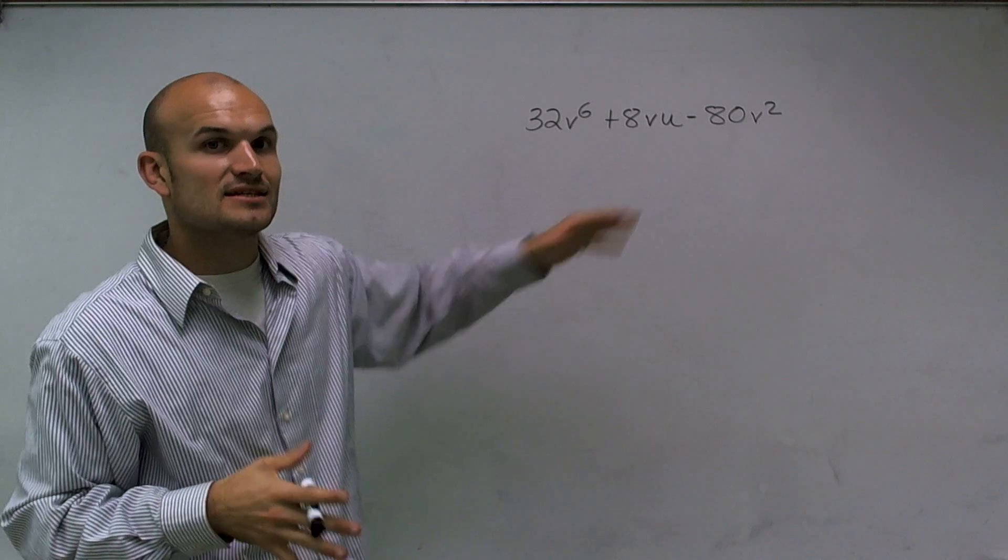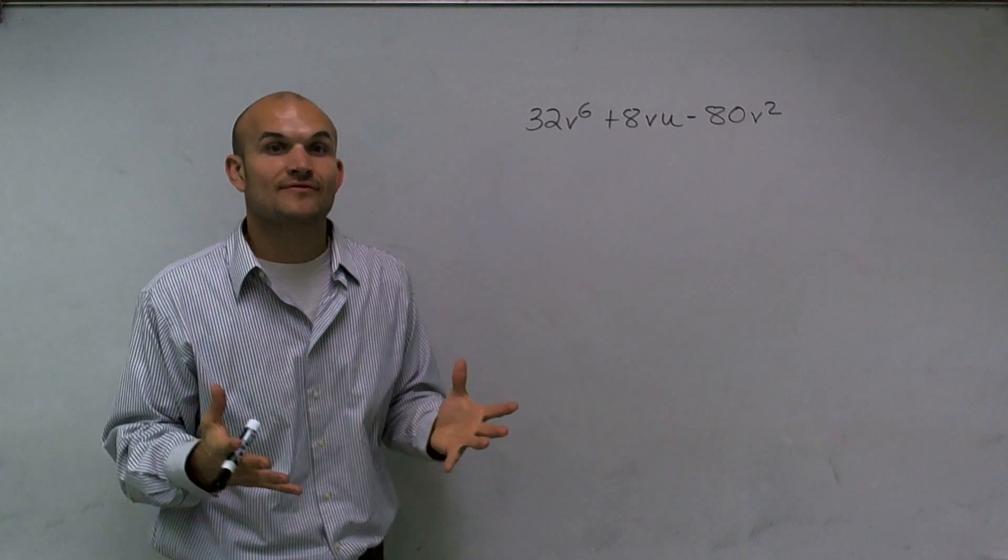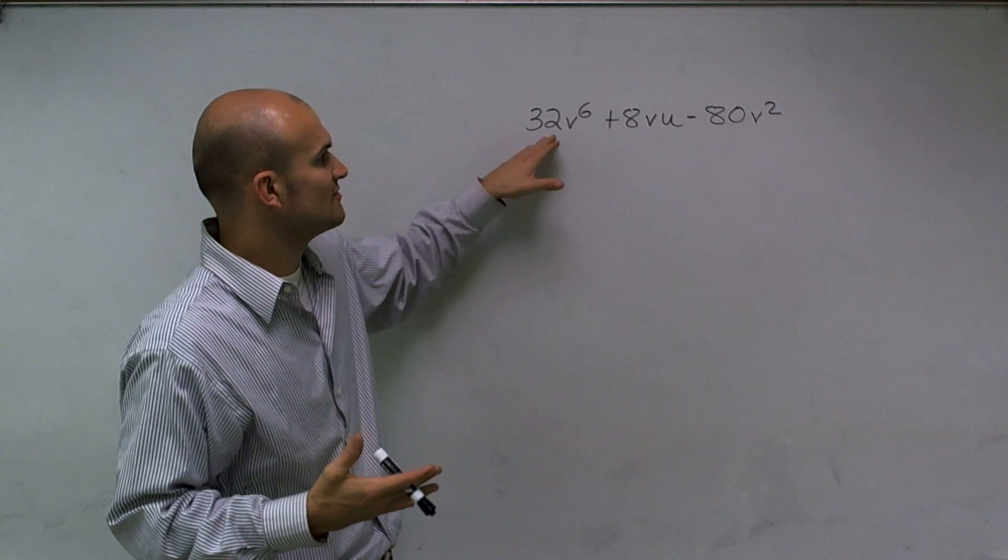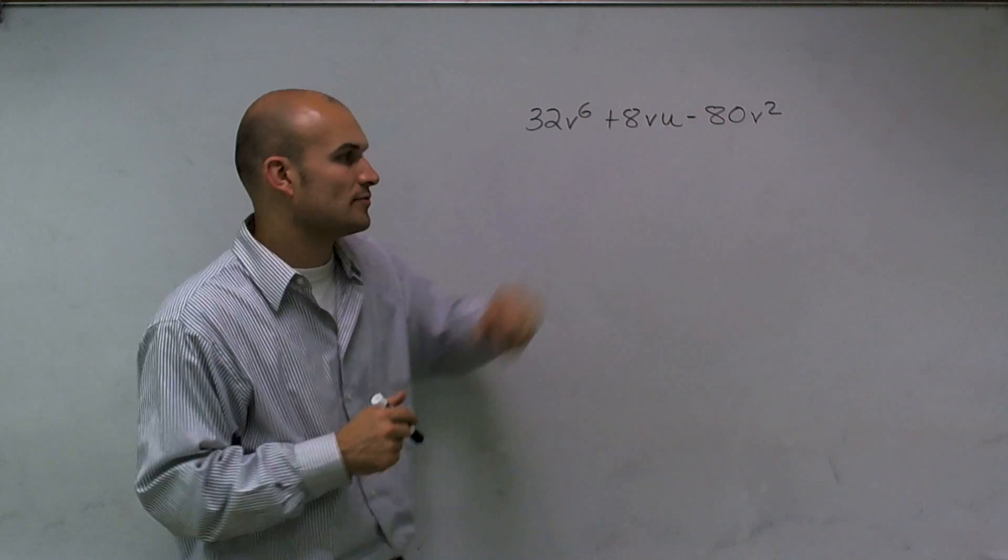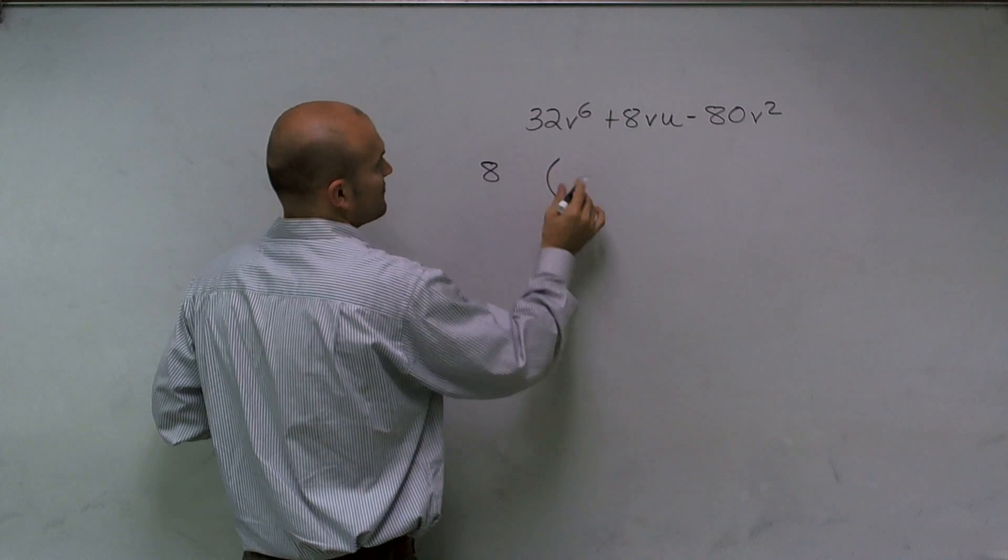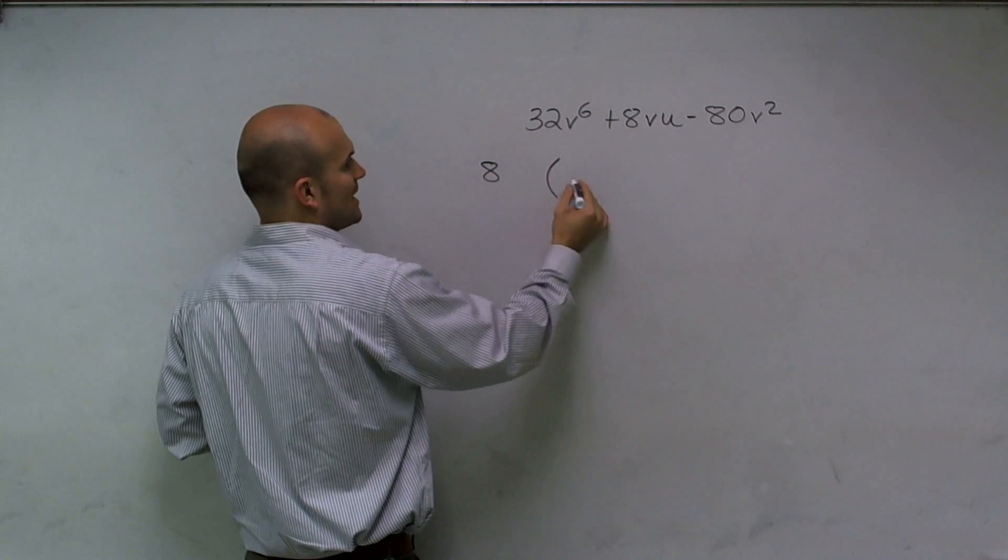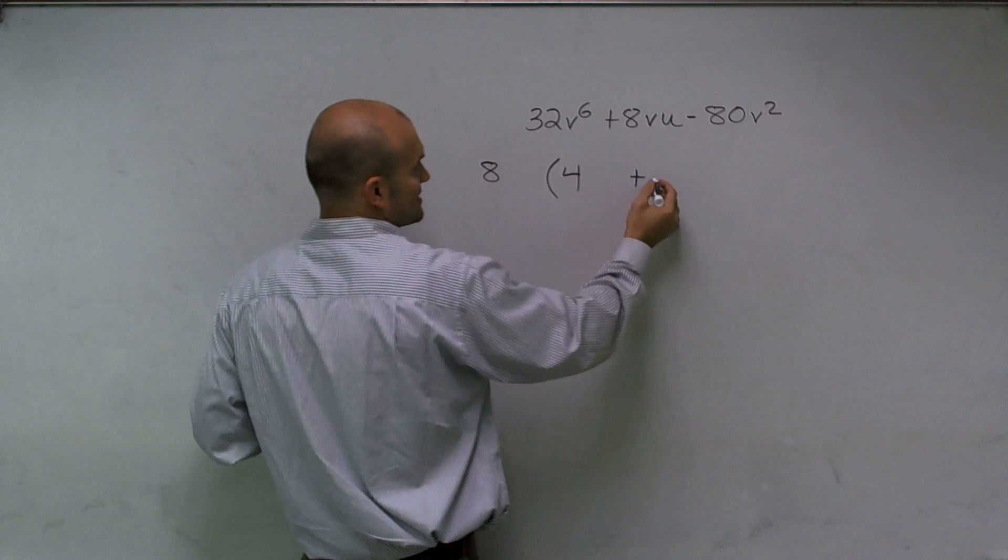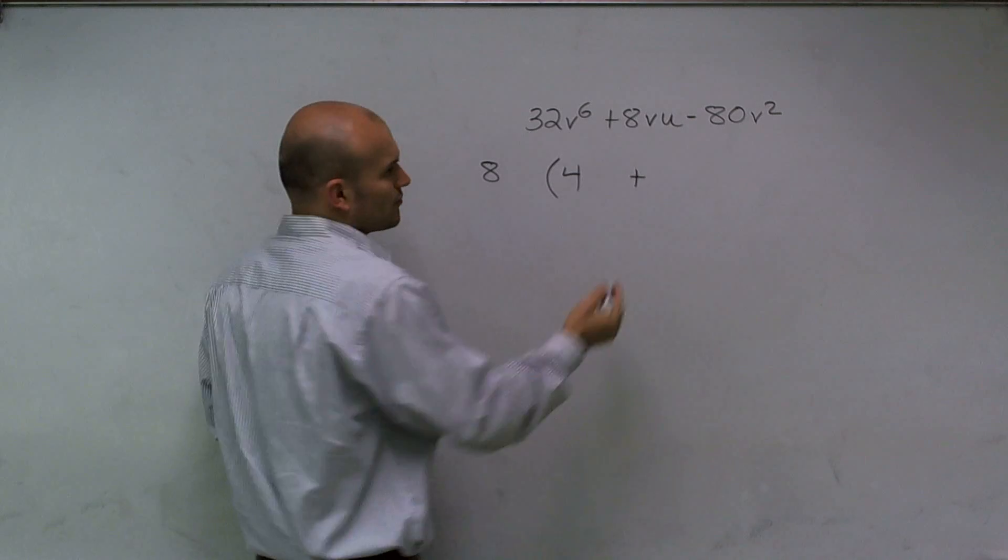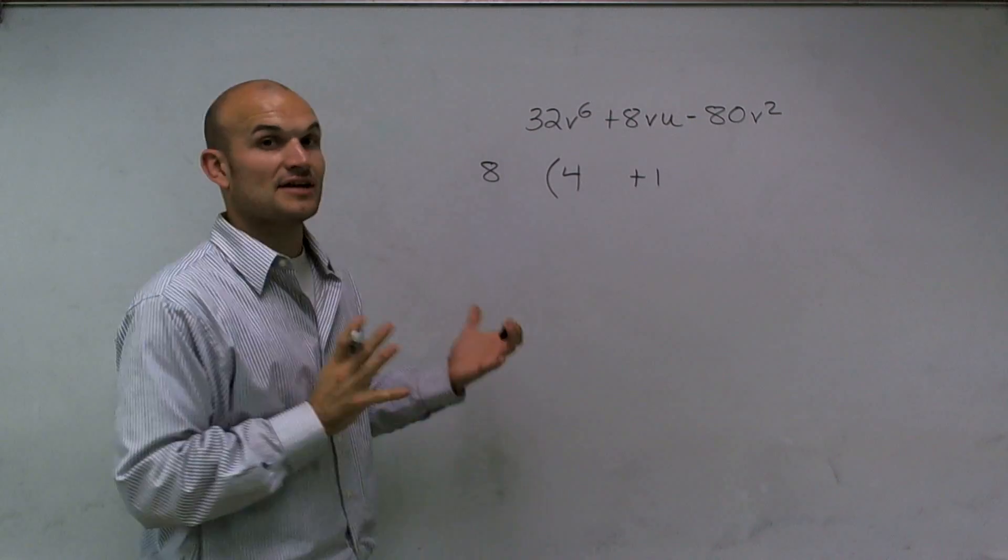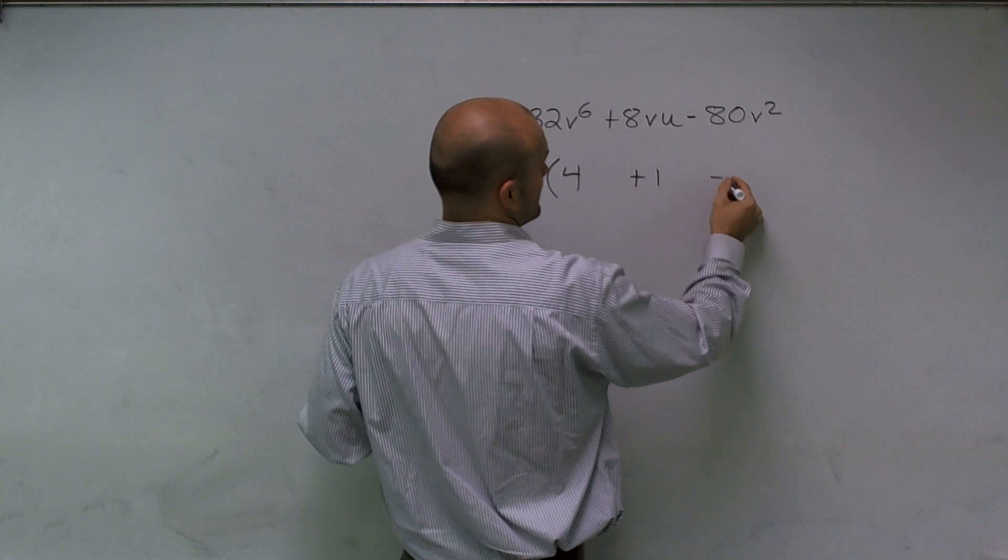So what I can do is, 8 is going to be what I call my greatest common factor. And what we're going to do is we're going to factor that out. Pretty much what that means is we're going to divide our 8 out of our three terms. So what I'll do is I'll write this 8 out here. And when I divide it out, 32 divided by 8 is going to give me a 4. 8 divide out of 8 is just going to leave me with a 1, which I'll write in here just so you guys can see it. And then negative 80 when I factor out an 8 is going to leave me with negative 10.